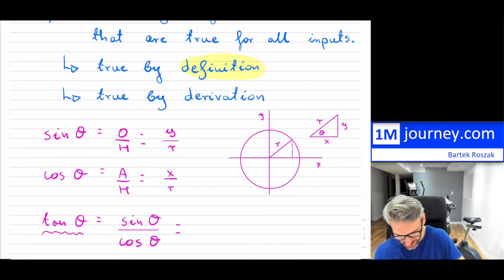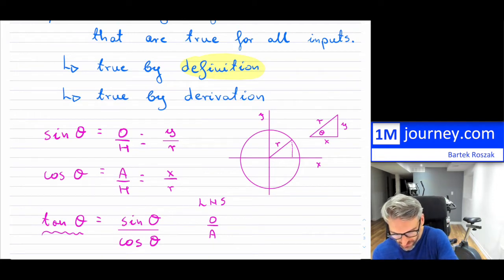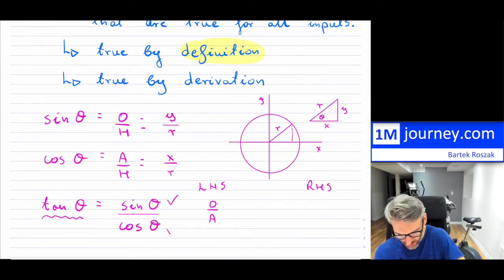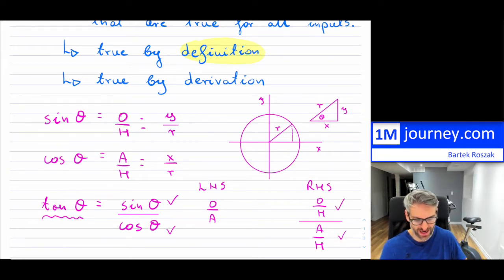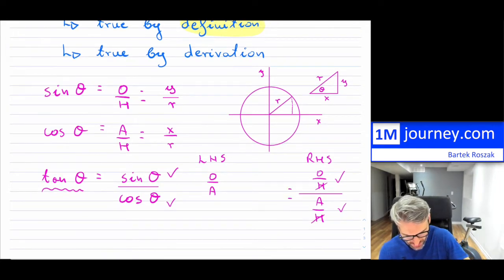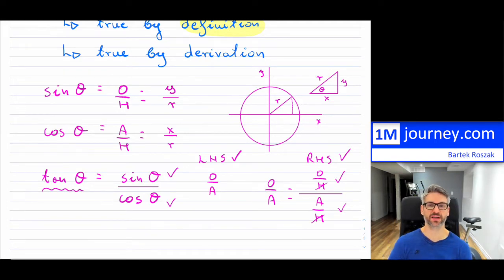Remember that tan theta is just opposite over adjacent — that's your tan theta, that's your left-hand side of the equation. And then your right-hand side of the equation: this is just sine theta over cosine theta. But sine theta was simply opposite over the hypotenuse. And cosine of theta is adjacent over hypotenuse. If you take these two ratios — this is just a fraction — the hypotenuse cancels off. And all you really have is opposite over adjacent. So your right-hand side is equal to the left-hand side.